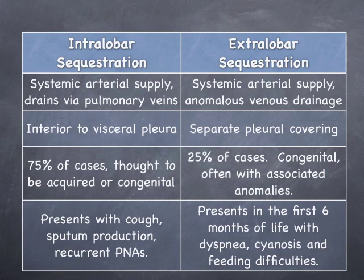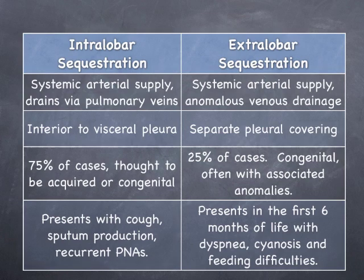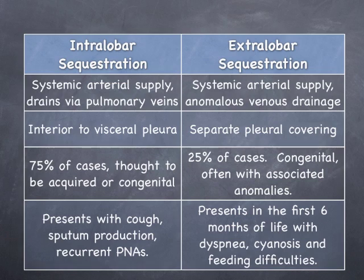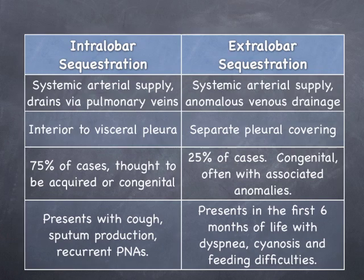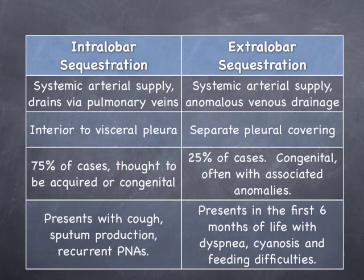Extralobar sequestrations present much earlier in life, often in the first day, with feeding difficulties, cyanosis, and dyspnea. Congestive heart failure and pulmonary overcirculation are also common complications. Occasionally, these sequestrations can communicate with the GI tract, and in these cases, they can have a similar presentation to the intralobar type. 65% of the time, extralobar sequestrations are associated with congenital anomalies, with congenital diaphragmatic hernia being the most common.